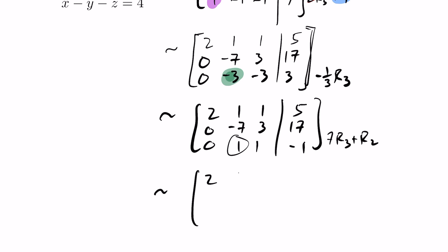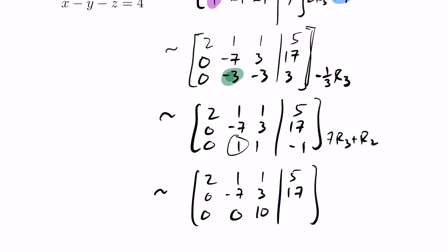Writing it all out: row 1 is 2, 1, 1, 5 — unchanged. Row 2 is 0, -7, 3, 17. Row 3: 7 times 1 plus 3 is 10, and 7 times (-1) plus 17 is 10, giving 0, 0, 10, 10. We've achieved our goal — the matrix is now row-reduced and upper triangular, so we can unravel the equations.